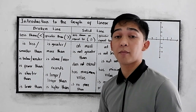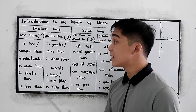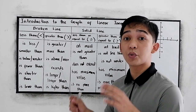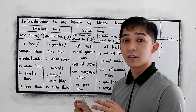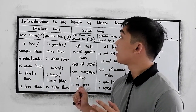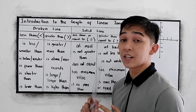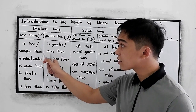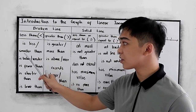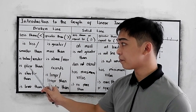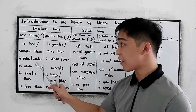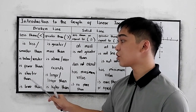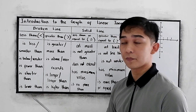For word problems, these are the things we need to know in order to write linear inequalities. For the less than symbol, we have: is less or smaller than, is below or under, is fewer than, is shorter than, is lower than.